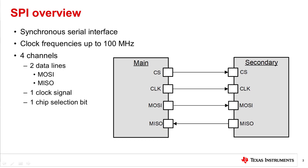Typically, the SPI bus contains four channels and two or more data lines. Please note the terminology used in this video: main is used to replace the designator master, and secondary is used to replace the designator slave. The two data lines are typically called and abbreviated as main-out and secondary-in, or MOSI, and main-in, secondary-out.